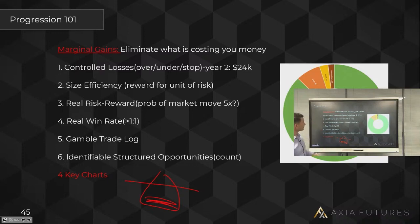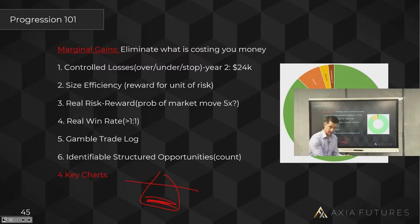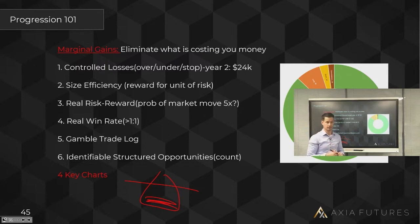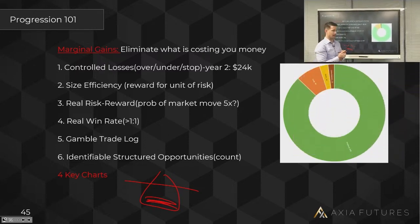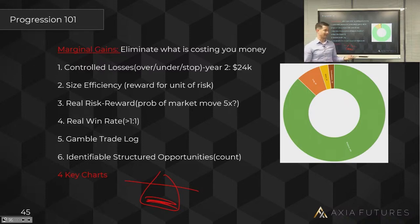What is a marginal gain? A marginal gain is when you eliminate what is costing you money. For example: if you're not applying a risk management model and every year you lose fifteen thousand dollars because of that, then you put a risk management model in place and suddenly what do you have? A marginal gain. That's what marginal gain theory is all about.